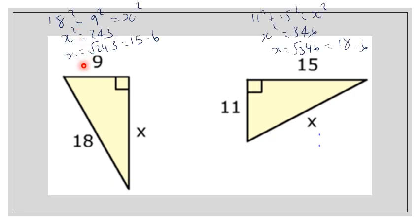OK, so we have got here we're finding a shorter side. So this 18 is C, so we're taking away: 18 squared take away 9 squared. That gives me 243 and then we make sure we square root.